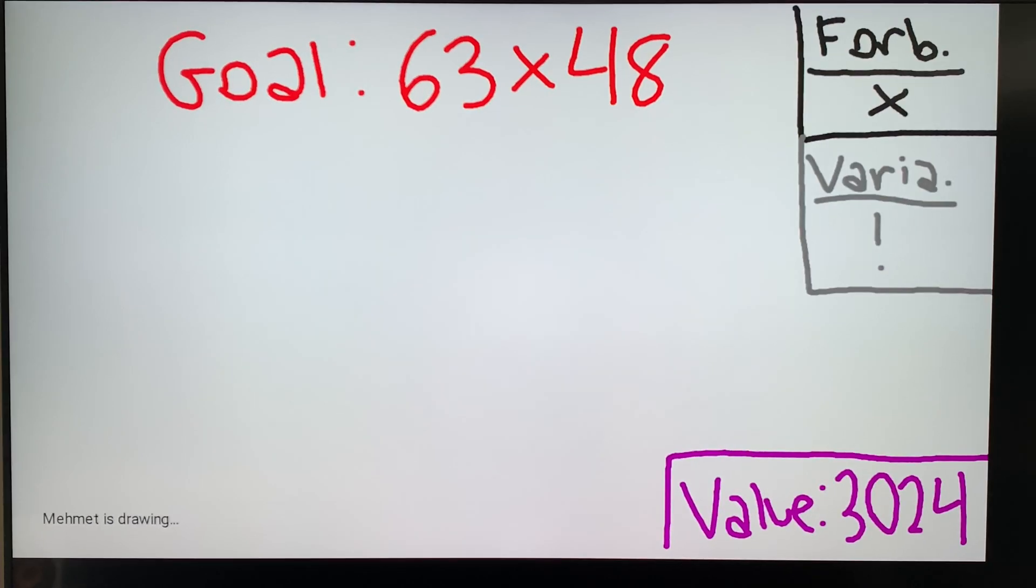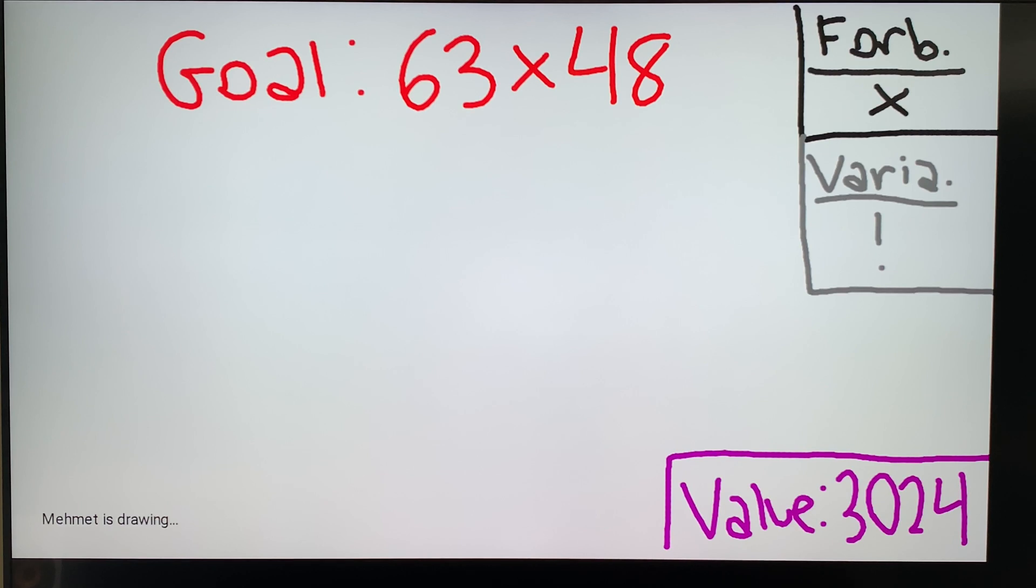So let's say the goal was 63 times 48. All multiplications are forbidden, and the variation is factorial that's been called. So the real value of this, if you were to do the multiplication, is 3,024. We're going to show you how you can get a solution to this goal, a really simple one, without using multiplication.